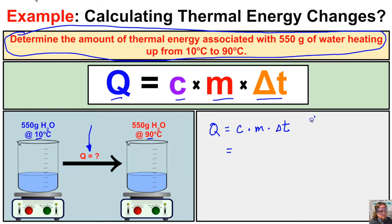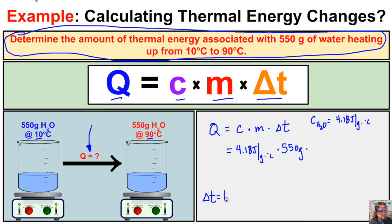The specific heat capacity of liquid water is 4.18 joules per gram degree Celsius. So we put in 4.18 joules per gram degree Celsius, times the mass of 550 grams, times the change in temperature. To get delta T, we take T final minus T initial: 90 degrees Celsius minus 10 degrees Celsius gives us a temperature difference of 80 degrees.